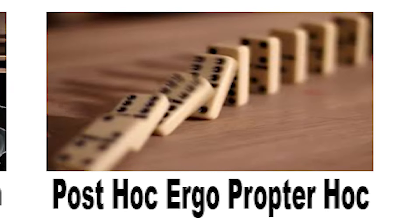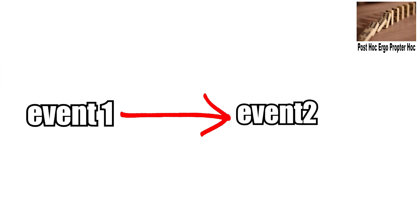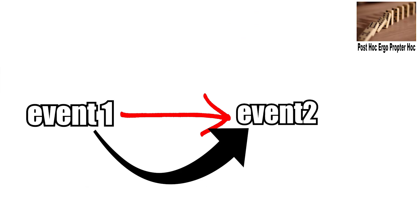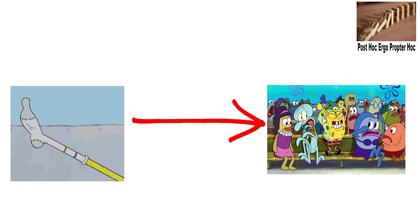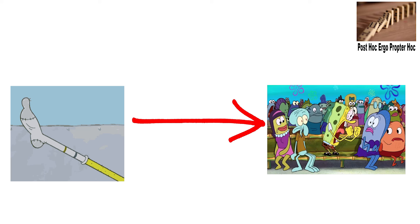Post hoc ergo propter hoc. This fallacy — that I won't pronounce again — assumes that because one event followed another, the first must have caused the second. For example, I wore my lucky socks and we won the game, so the socks must have helped us win — incorrectly linking the two events.